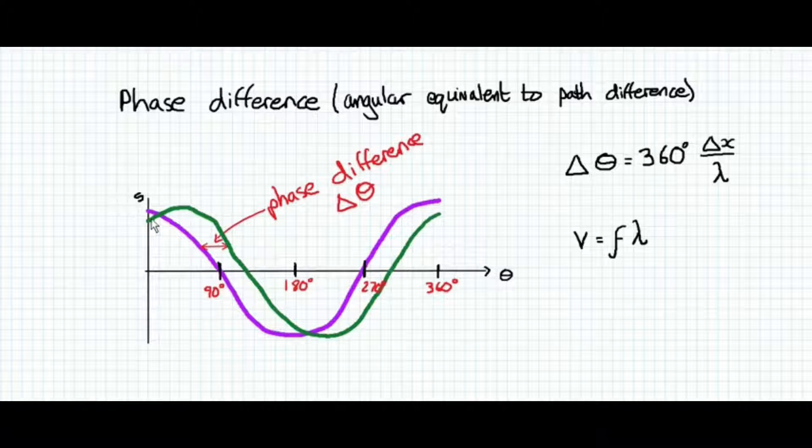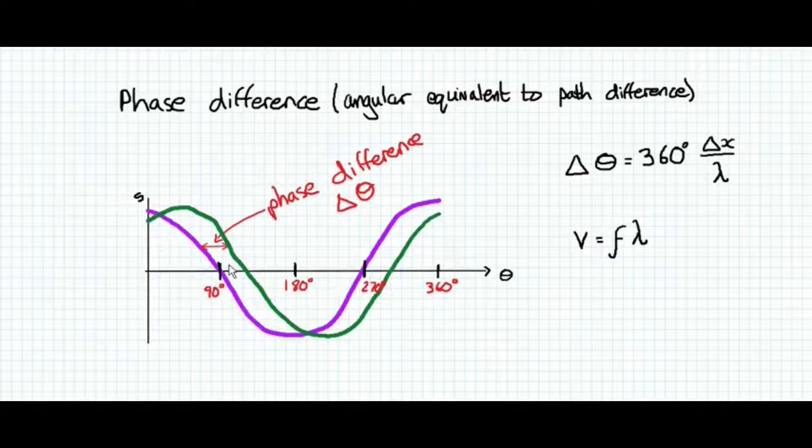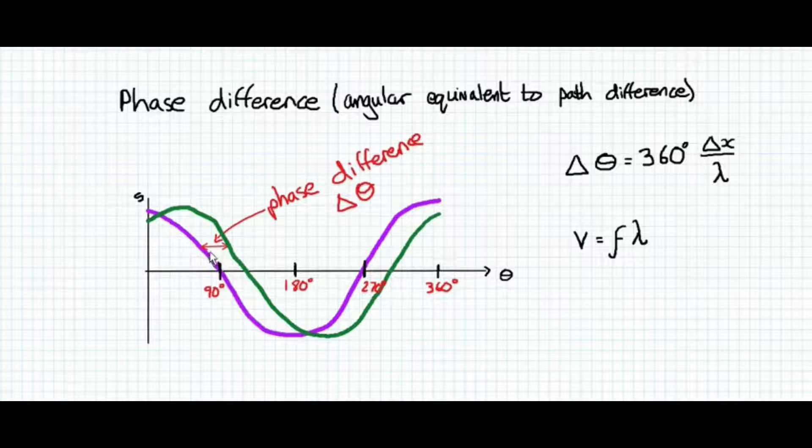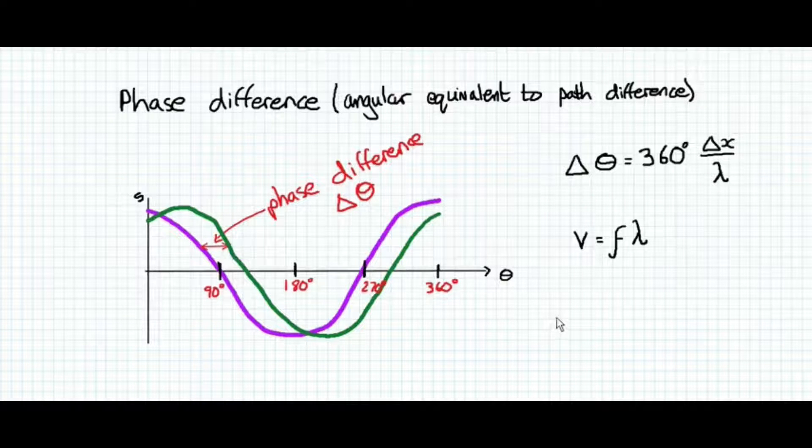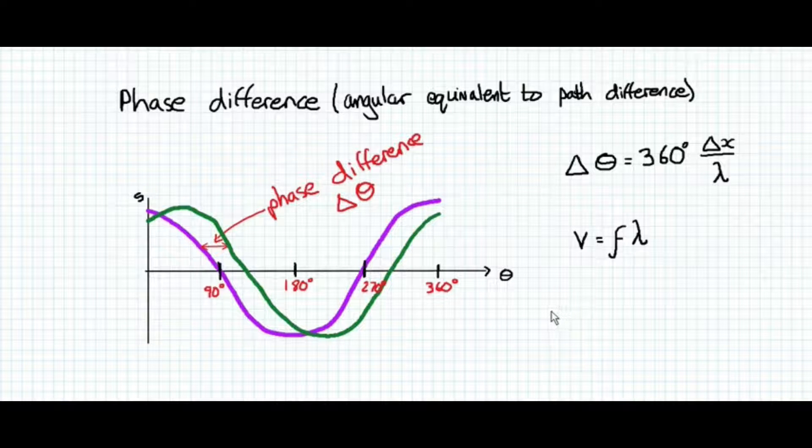If we consider two waves, drawn here in pink and green, then the phase difference is the angle between those two waves where they are of equivalent phase. So at every point in this diagram, the green wave is slightly ahead compared to the pink wave, and the green wave is ahead by a phase difference delta theta.